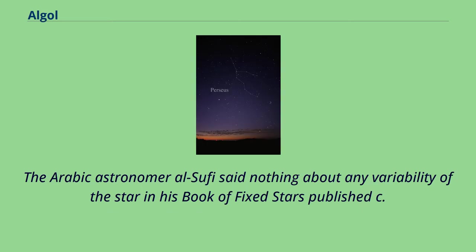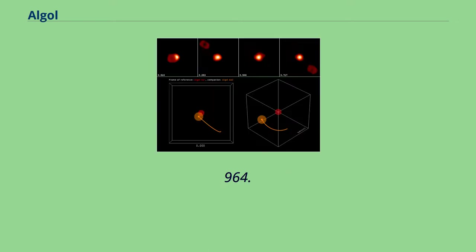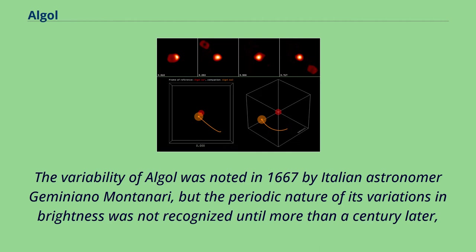The Arabic astronomer Al-Sufi said nothing about any variability of the star in his Book of Fixed Stars published circa 964. The variability of Algol was noted in 1667 by Italian astronomer Geminiano Montanari, but the periodic nature of its variations in brightness was not recognized until more than a century later.